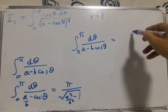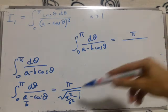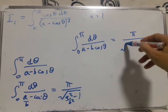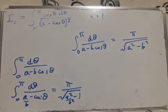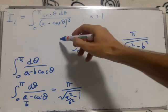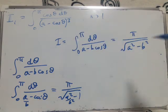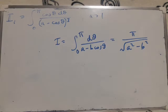I end up with basically what I want, so I end up with a minus b cos θ equals π, and then multiply the bottom by b gives me root(a² - b²). So I call this integral I.